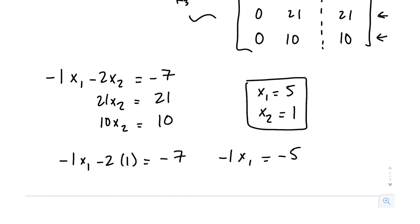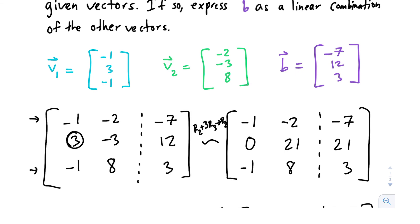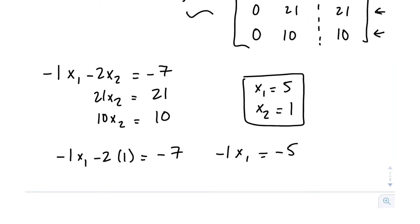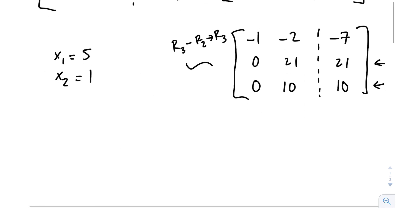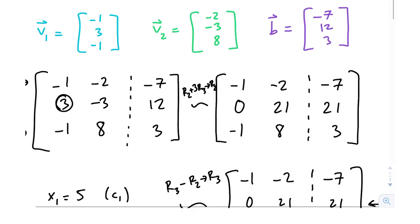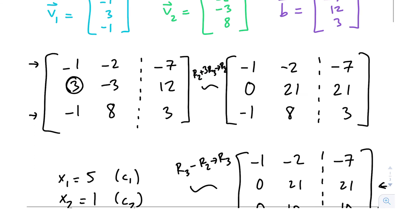So we got a solution. But now what we want to do is answer that question. Is b in the span of the other vectors? Yes, it is. We define span as it being a linear combination of the other vectors. And here we've determined what we had to multiply each vector by in order to get b. So these are our constants. You can think of this as c1, you can think of this as c2. So what we're going to do is represent it as a linear combination. And what we've noticed is we said we want to multiply 5 by vector 1.